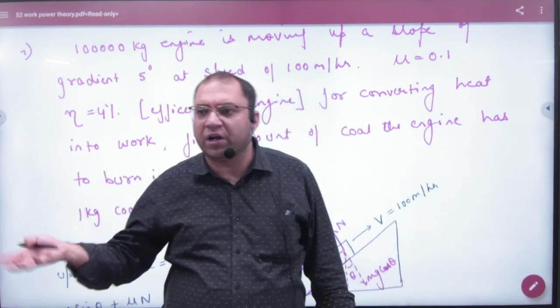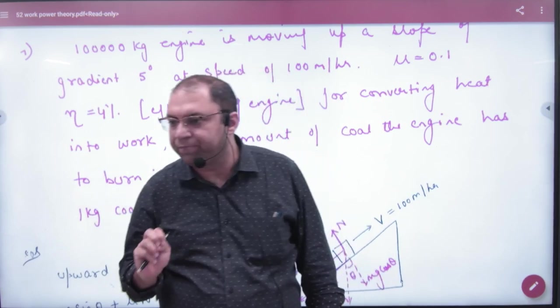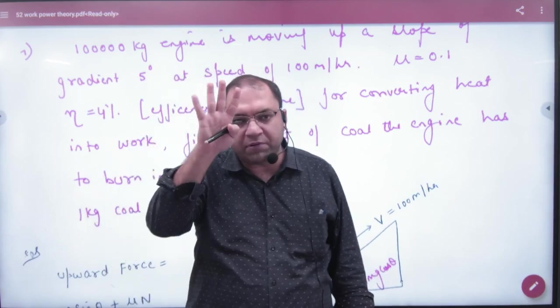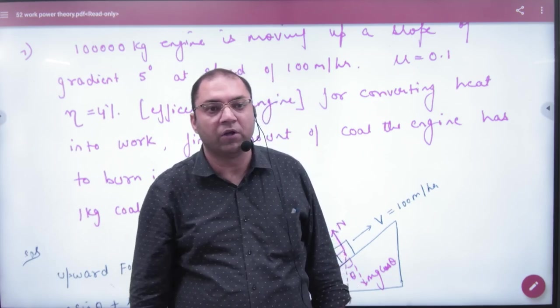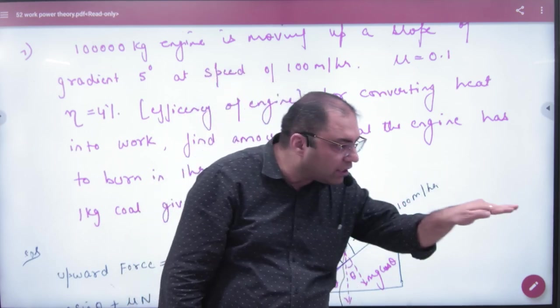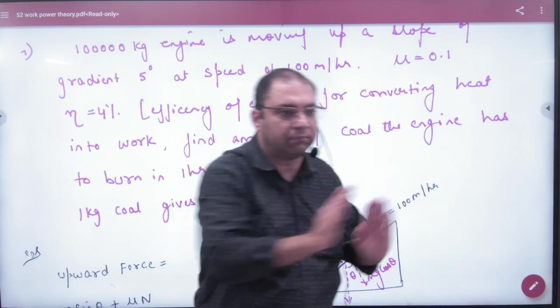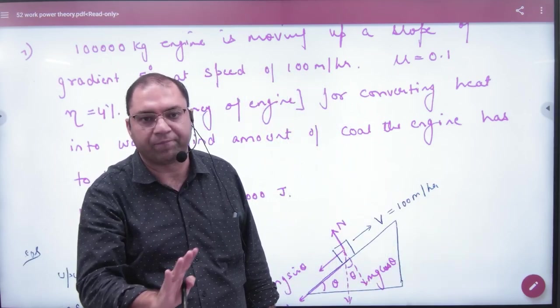Suppose input energy is 100 joules from coal. Since the engine is only 4% efficient, it will waste 96% of the coal's energy and only do 4 joules of work. It takes a lot but does very little - this is a low efficiency engine.